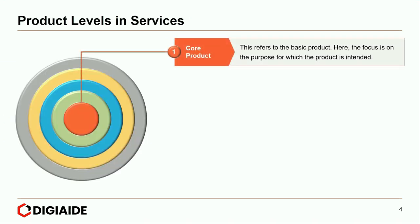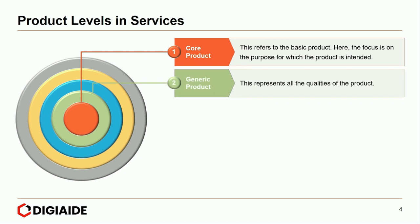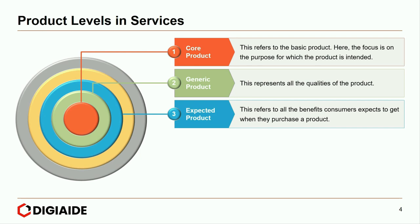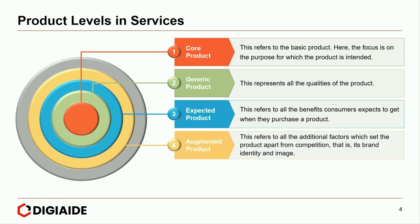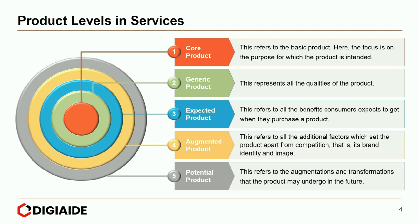The first is a core product — this refers to the basic product, where the focus is on the purpose for which the product is intended. Then comes the generic product, which represents all the qualities of the product. Third is the expected product — all the benefits a customer expects when they purchase. Fourth, the augmented product refers to all the additional factors which set the product apart from competition, its brand identity and image. And finally comes the potential product — the augmentations and transformations the product may undergo in the future.